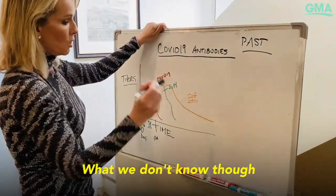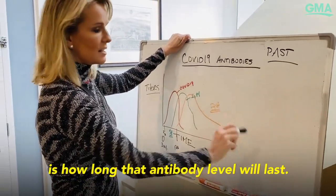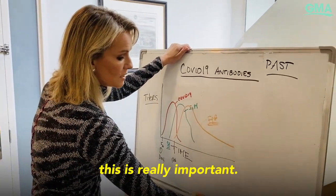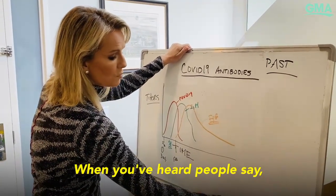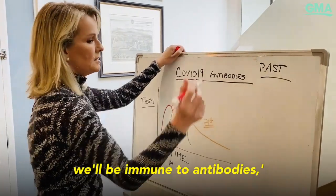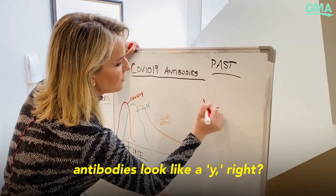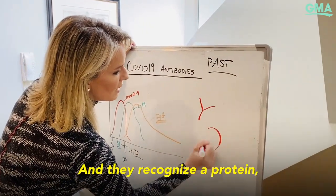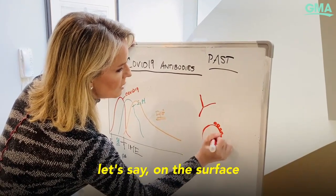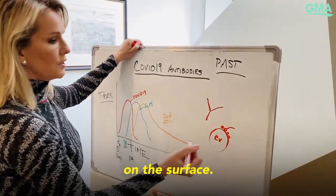What we don't know is how long that antibody level will last. The other thing we don't know — and when you talk about antibodies, this is really important — when you've heard people say we don't know whether or not we'll be immune: antibodies look like a Y, and they recognize a protein, let's say on the surface of the coronavirus, like those spike proteins on the surface.